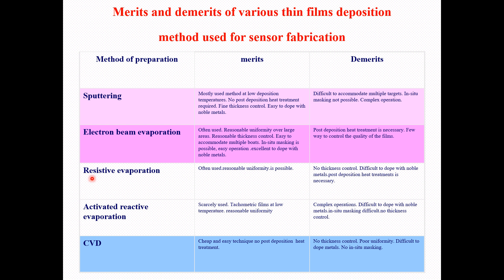Resistive evaporation is another type of evaporation technique that can also be utilized for sensor fabrications. It is very often used and provides reasonable uniformity in depositions for sensor fabrications. The demerits include: no thickness control, difficult to dope with noble metals, and post-deposition heat treatment is necessary — without post-deposition heat treatment, fabrication is not possible with this technique.